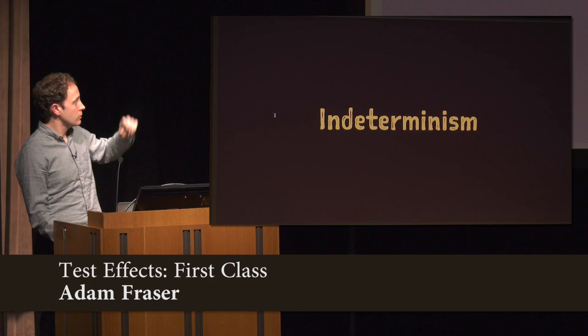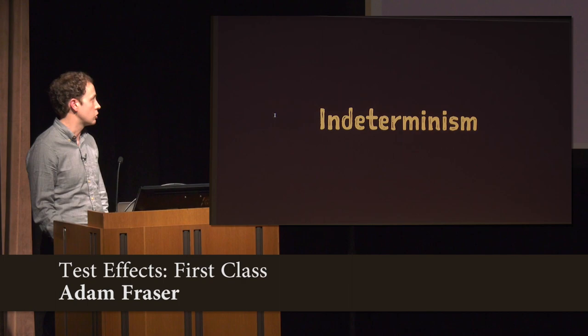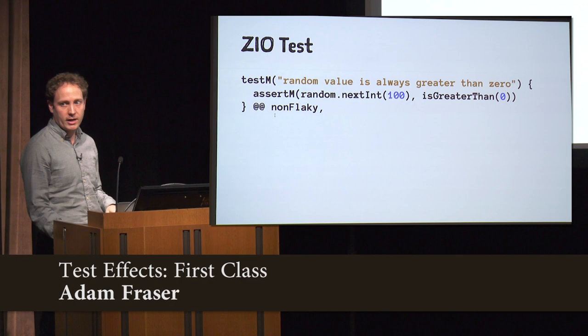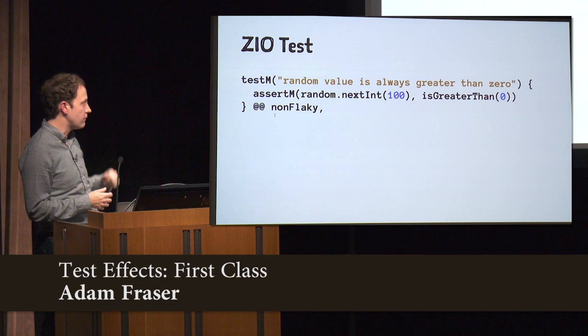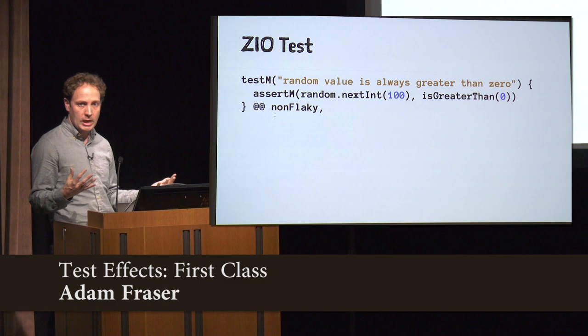Then we talked about how to make sure a test is consistently passing, maybe when dealing with some type of concurrency issue or race condition. Well, there's a test aspect for that. NonFlaky will just run a test a specified number of times — by default 100, but put in whatever number you want — and it'll be successful if all those runs pass. Otherwise, it'll fail the test.